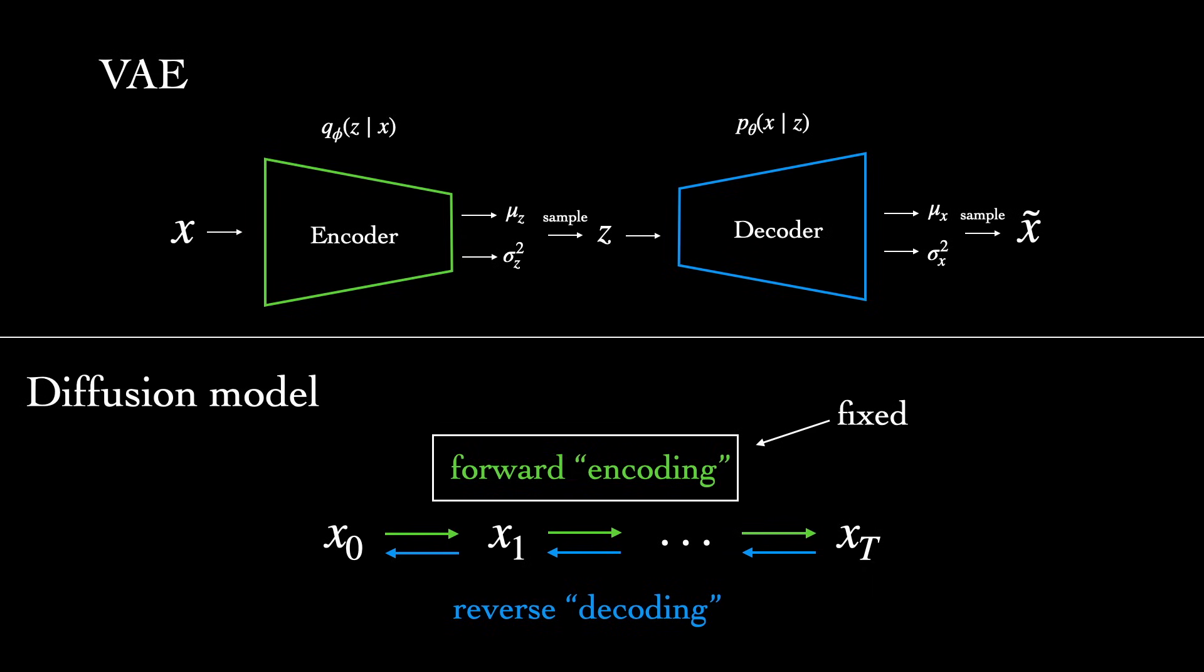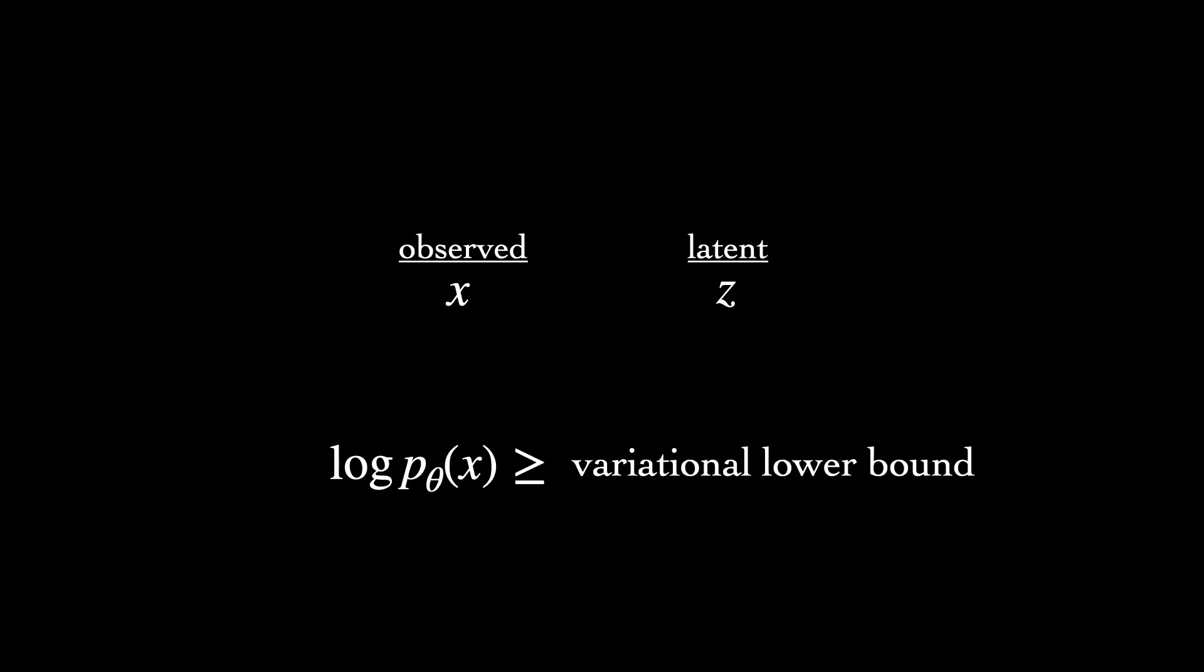So we can now borrow the basic training objective used by VAEs and a number of other latent variable models. When we have a model with observations x and latent variable z, we can derive what's called the variational lower bound, also known as the evidence lower bound, a lower bound on the marginal log likelihood, p theta.